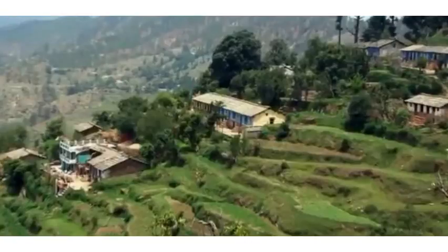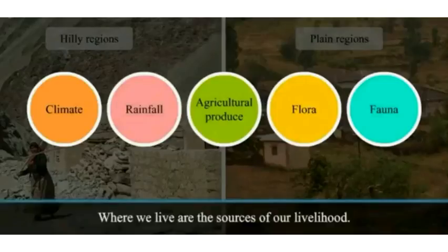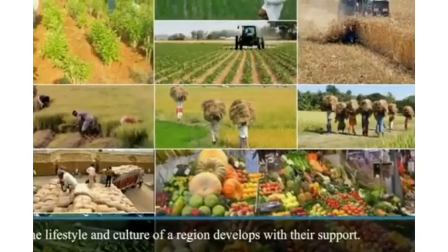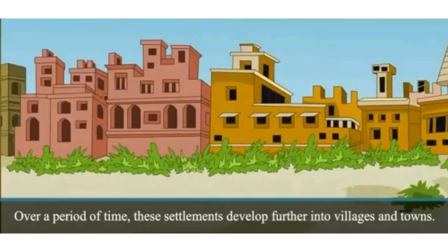In comparison, people on the plains get grains and vegetables in sufficient measure. Naturally, this has an impact on the diet of the people. In hilly regions, people depend more on hunting and gathering food. We also find other such differences in the lifestyle of people of the hilly region and those of the plains. The climate, rainfall, agricultural produce, flora and fauna of the region where we live are the sources of our food and lifestyle. The culture of a region develops with their support.